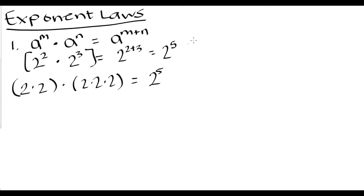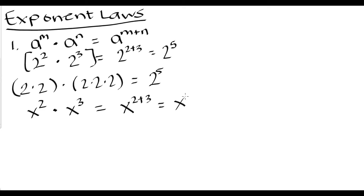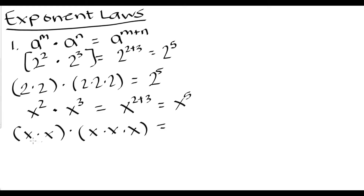Let's look at one more example in terms you are more likely to see. If we have x squared multiplied by x cubed, this law says that is the same thing as x to the power of 2 plus 3, or x to the fifth power. The same logic applies: x squared is x times x, multiplied by x cubed which is x times x times x — giving us x to the fifth power.